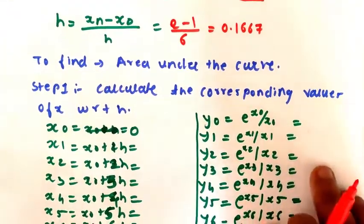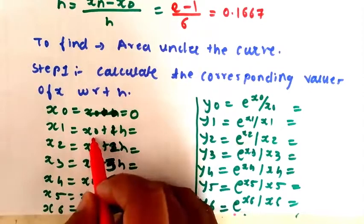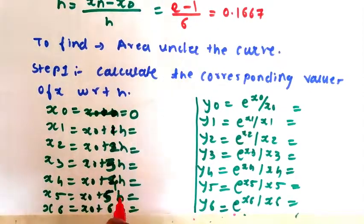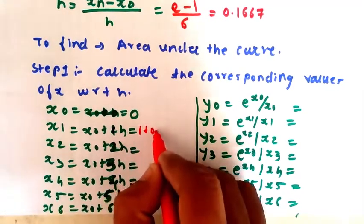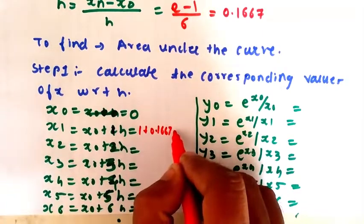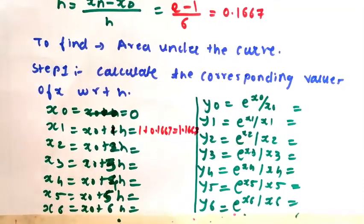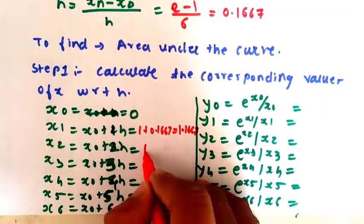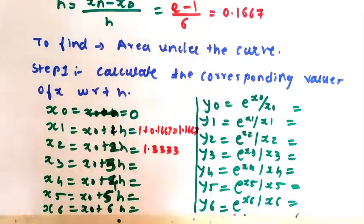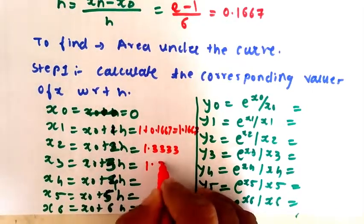First of all, find out the value of x. x0 is 1. x1 formula is x0 plus h — that is 1 plus 0.1667 — so x1 equals 1.1667. Similarly, x2 is x0 plus 2h, which gives us 1.3333. x3 is x0 plus 3h, which is 1.5. Keep values to 4 decimal places.